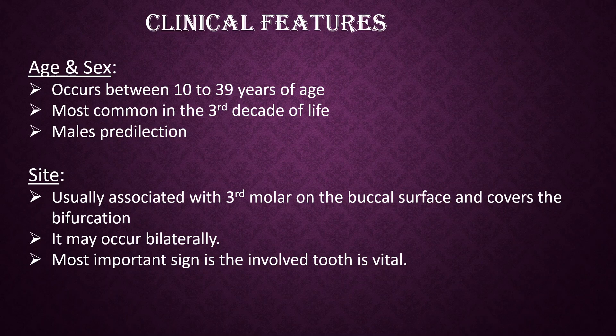Clinical Features. Age and Sex: it occurs between 10 to 39 years of age and is most common in the third decade of life. It shows predilection for males. Site: usually associated with the third molar on the buccal surface and covers the bifurcation. It may occur bilaterally. The most important sign is that the involved tooth is vital.